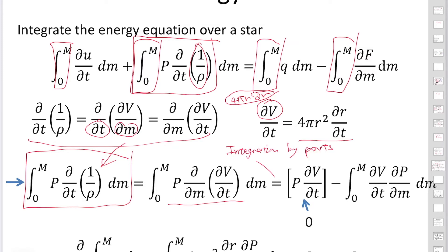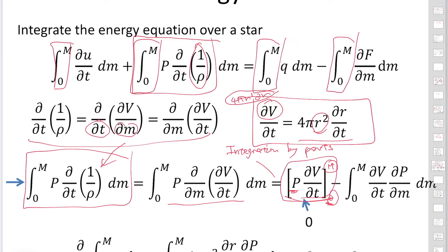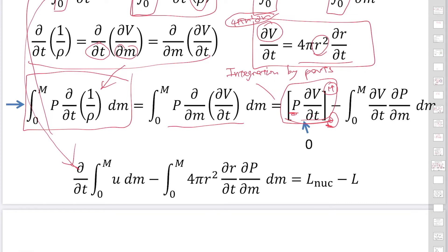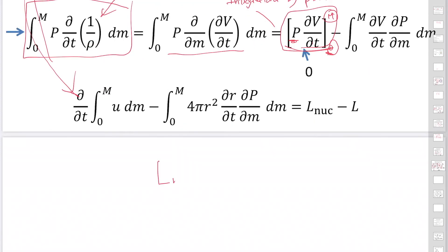At the surface, P equals zero, so we integrate from zero to M. At M, pressure is zero. At the center, ∂V/∂T is zero because R equals zero there. So this first term becomes zero. The first integrated equation then becomes L_nuc equals the integral from 0 to M of Q dM.